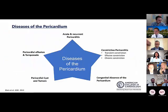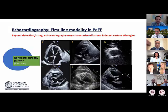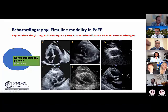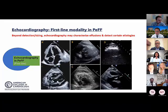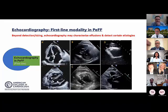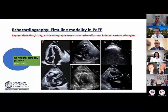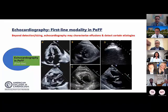For pericardial effusion, echocardiography is the first-line imaging modality. However, we must go beyond detection and sizing — we should characterize the effusion and try to ascertain an obvious cause, which is very helpful for management. In Panel A, a simple anechoic effusion might suggest a transudative process, but this must be correlated with the clinical presentation.